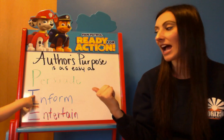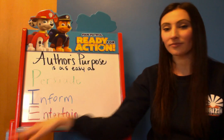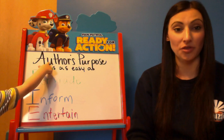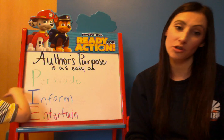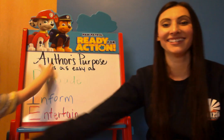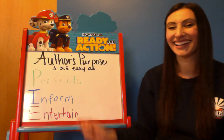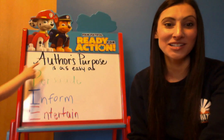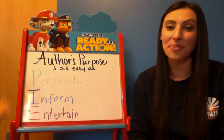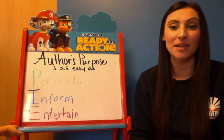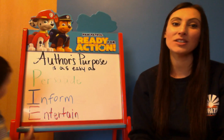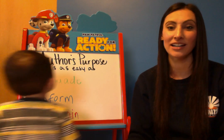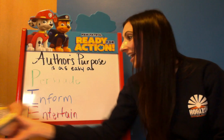So author's purpose — why does an author write the book? Three reasons: our acronym PIE. Persuade means I'm going to change your thoughts, your opinion, your mind. I means I'm going to teach you something, you're going to learn something. And E means you're going to enjoy the story and have a good time — you're going to laugh.